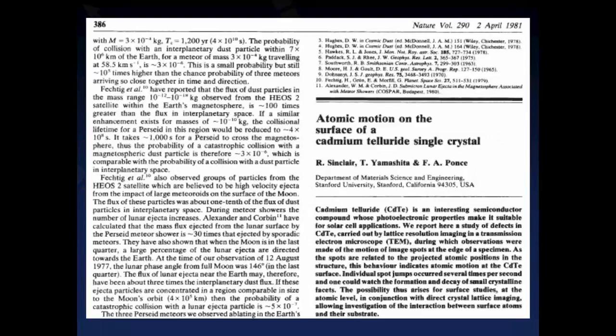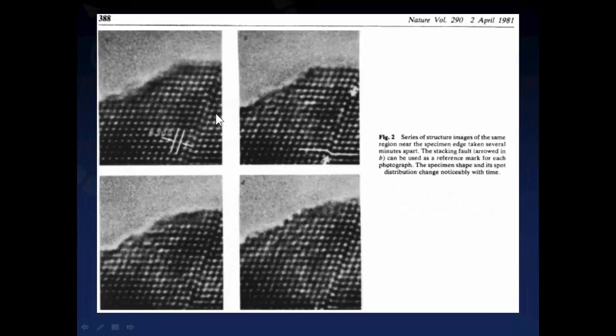Around the same time, a group at Stanford University utilized a medium-voltage electron microscope operated at 120 kV and reported observations of atomic motion on the surface of a cadmium telluride single crystal. Because it was a medium-voltage microscope, the samples were much thinner, and a lot more structural detail could be resolved. What the Stanford group observed was individual bright spots moving along the edge of the cadmium telluride sample, with jumps occurring several times per second, corresponding to the atomic separation between the 111 planes of cadmium telluride.